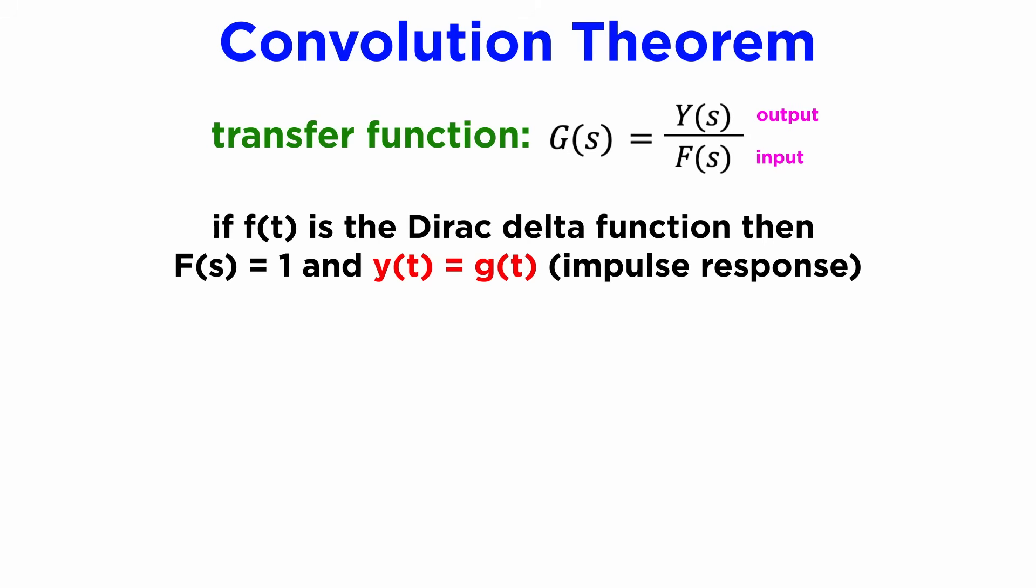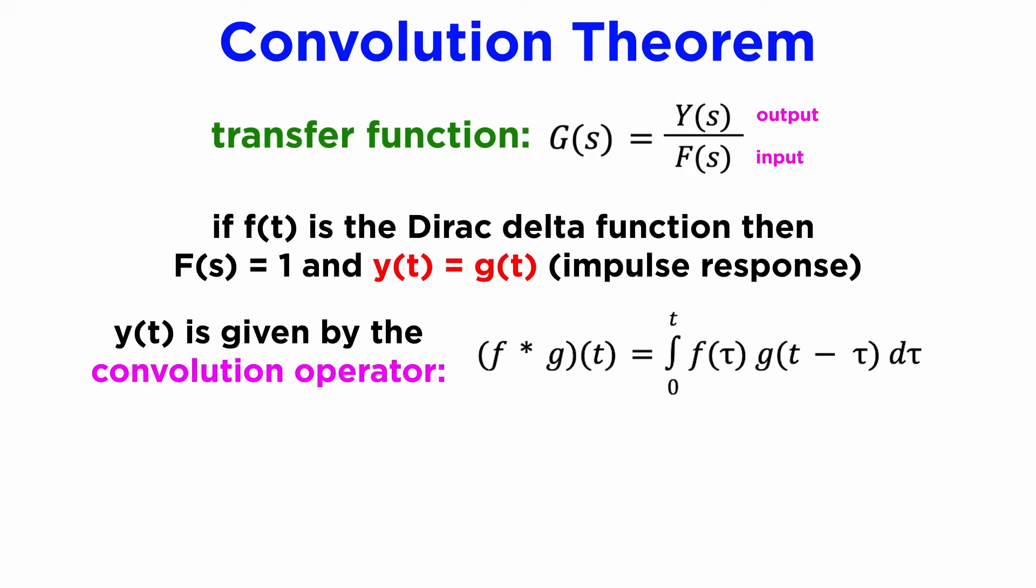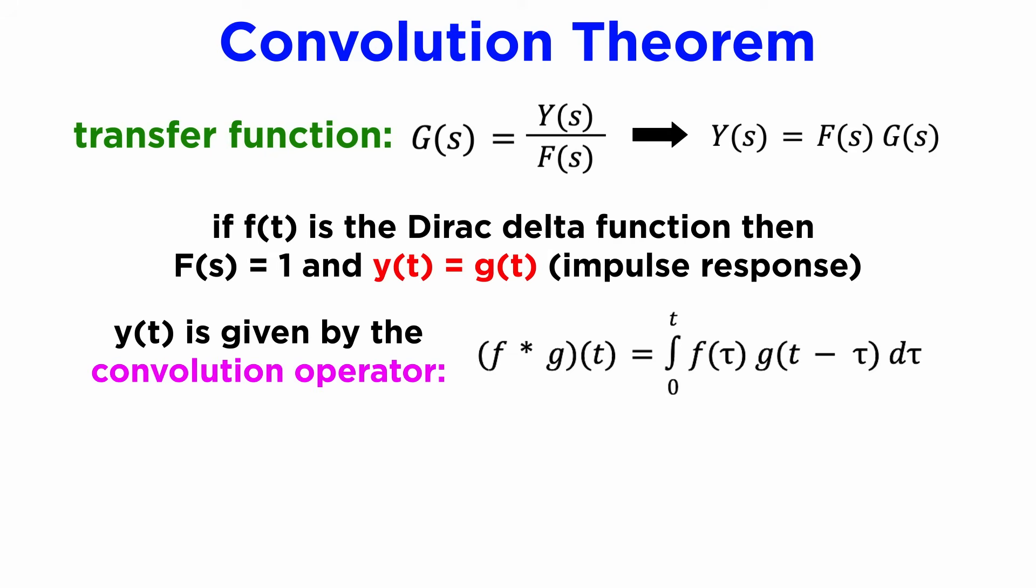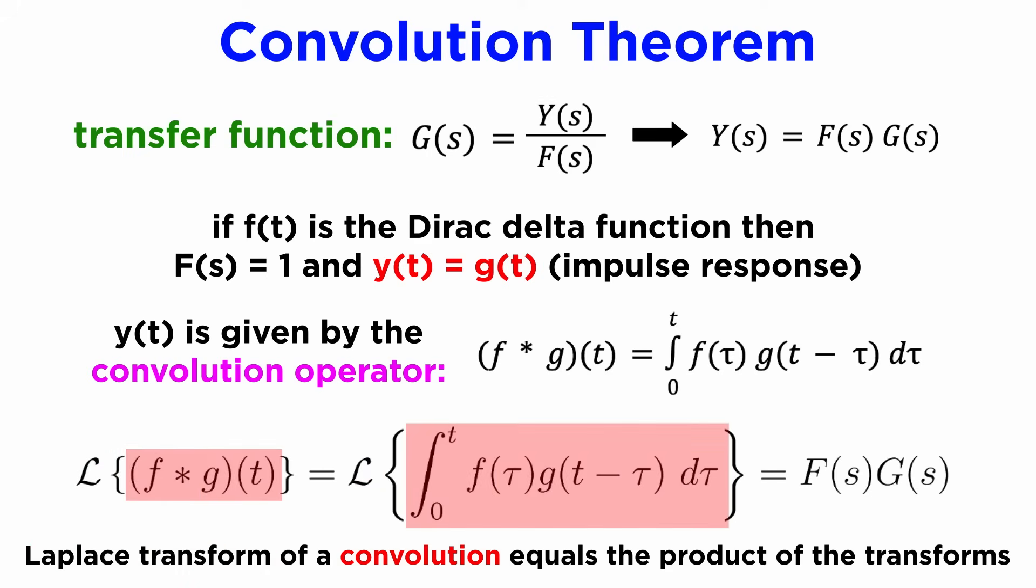We know that if the input f(t) is the Dirac delta function, then its transform F(s) is just 1, and the time domain output y(t) is the impulse response g(t). But using the convolution operator we just derived, we now know that y(t) in general is given by the convolution of f and g. Since Y(s) is equal to F(s) times G(s), we get a result called the convolution theorem. The Laplace transform of a convolution is equal to the product of the transforms.